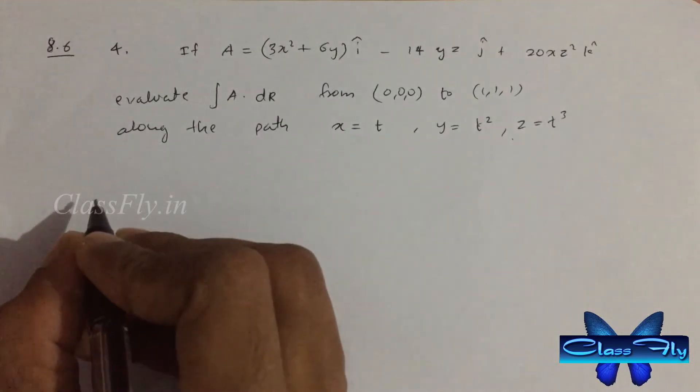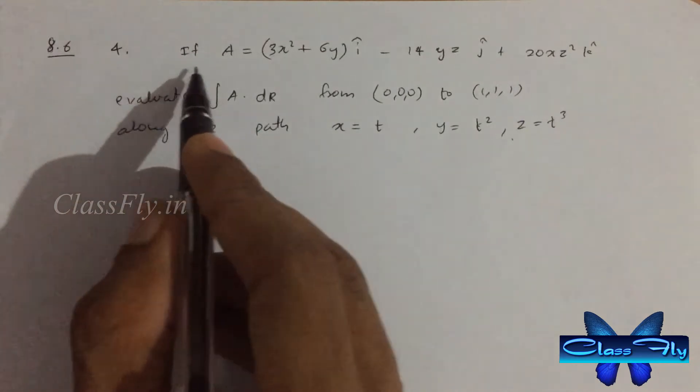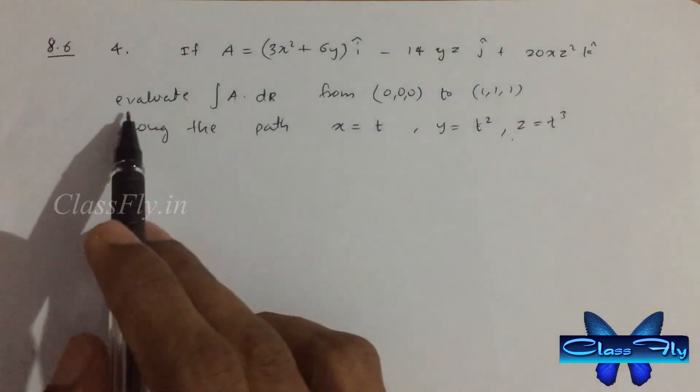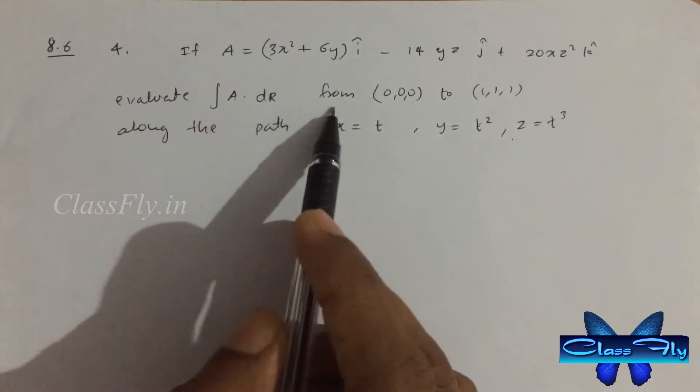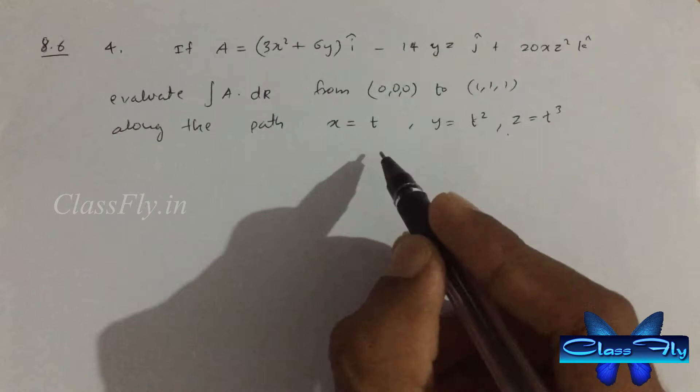Exercise 8.6, fourth question. If A equals 3x square plus 6y i cap minus 14yz j cap plus 20xz k cap, evaluate integrate A dot dr from (0,0,0) to (1,1,1) along the path x equals t, y equals t square, z equals t cube.